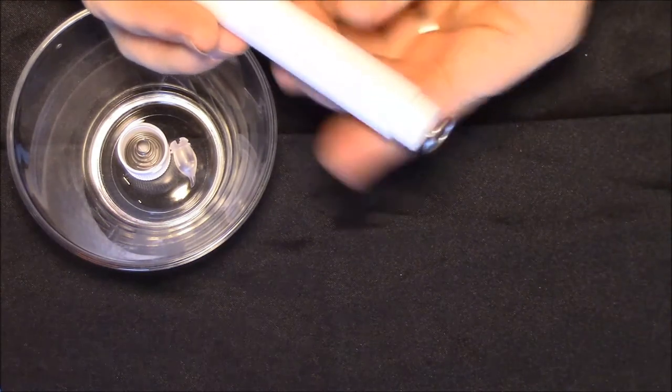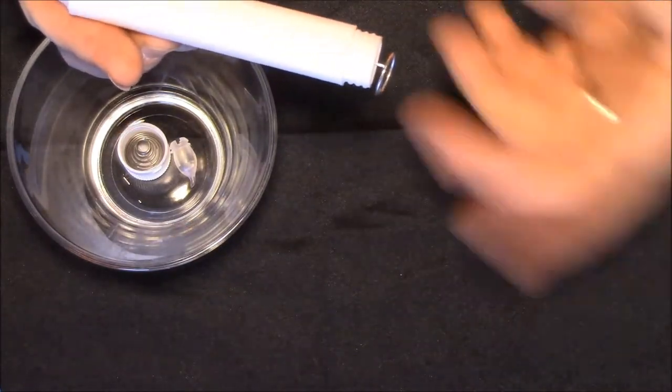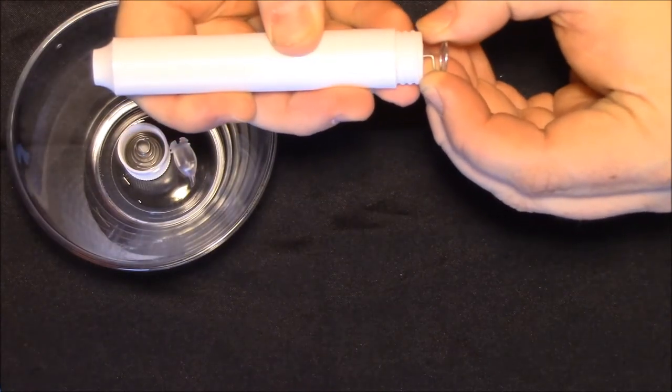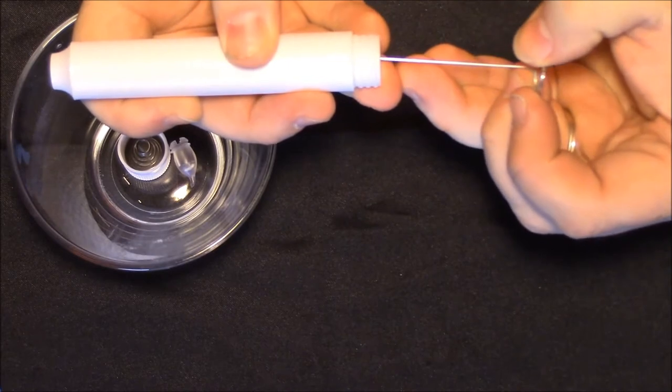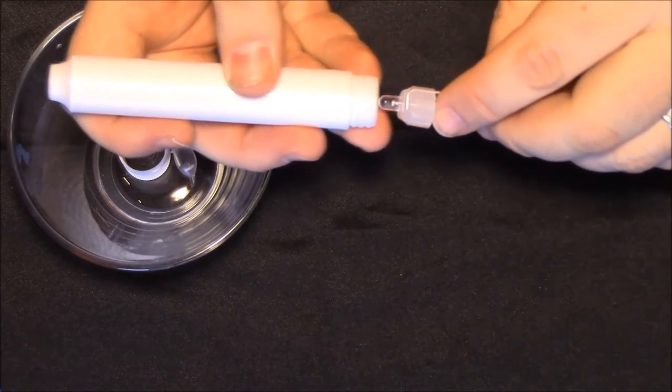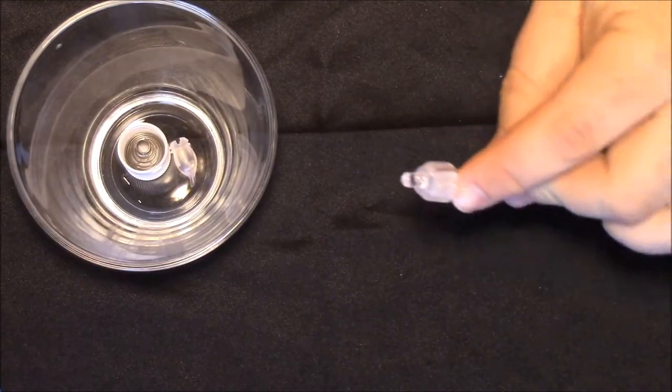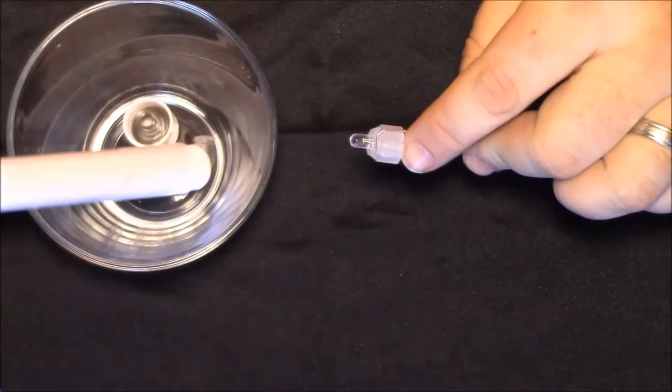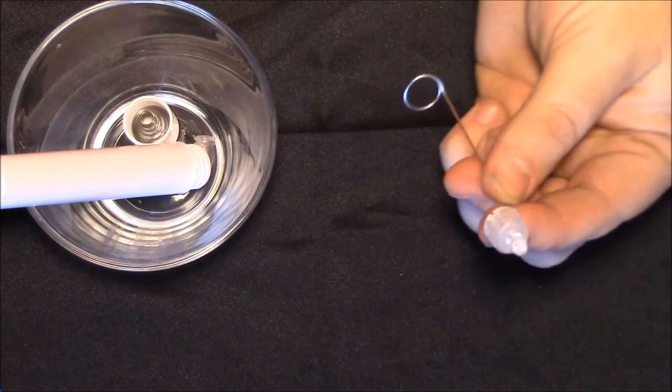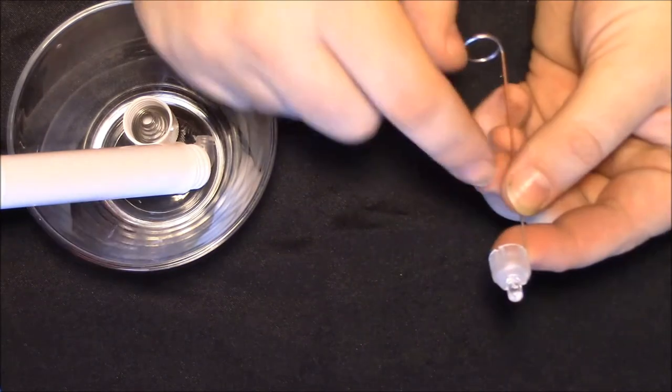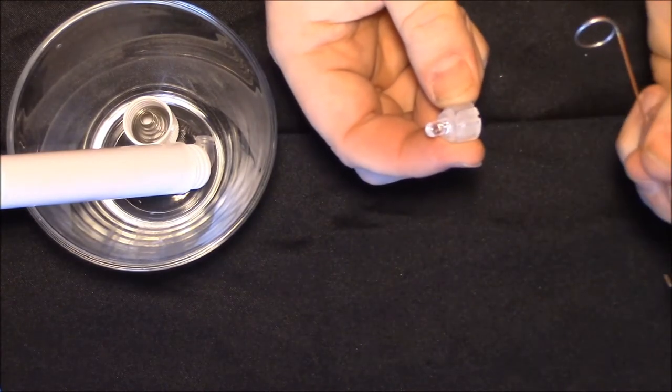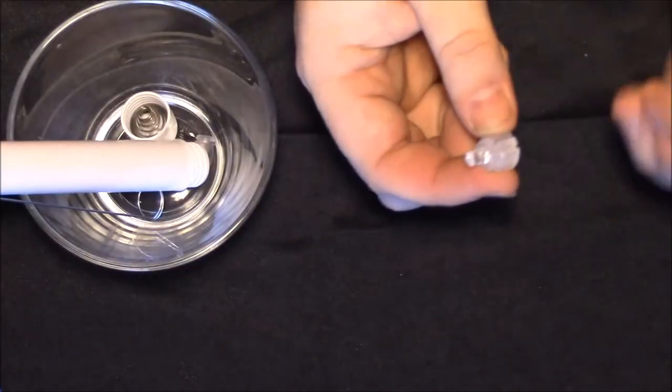You'll notice this metal ring down here at the bottom is pushed out. This is where you could use pliers, but you really shouldn't need to. Just take your fingers and gently pull on this piece until it comes out. And there you have the LED housing. Set that off to the side.